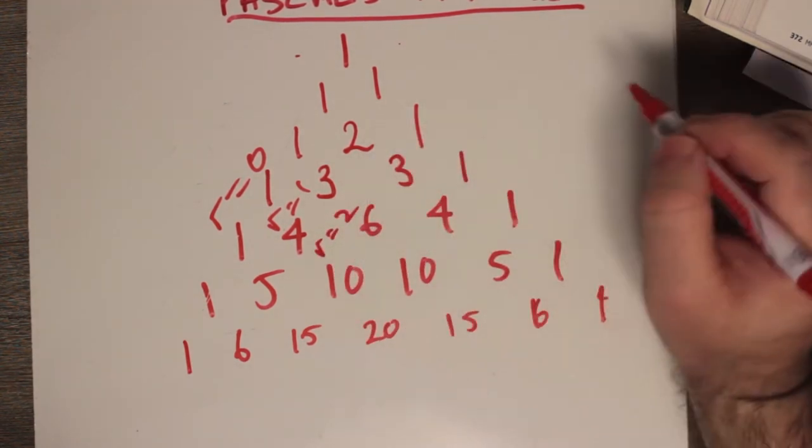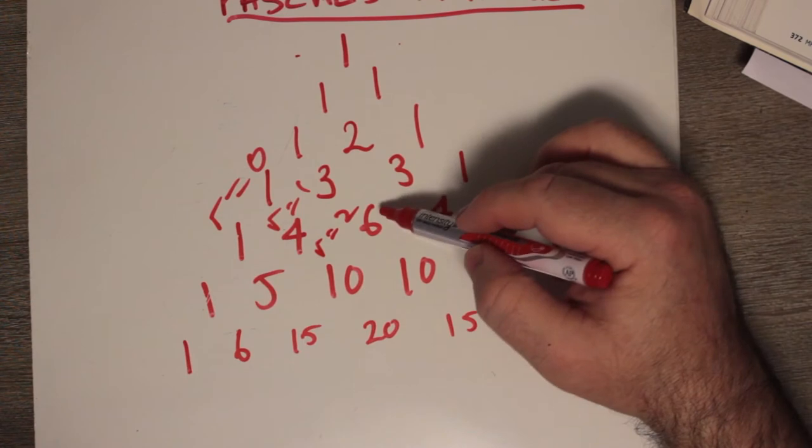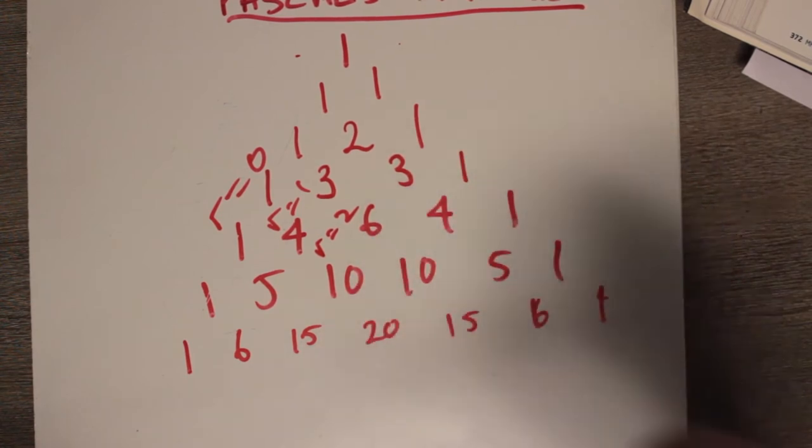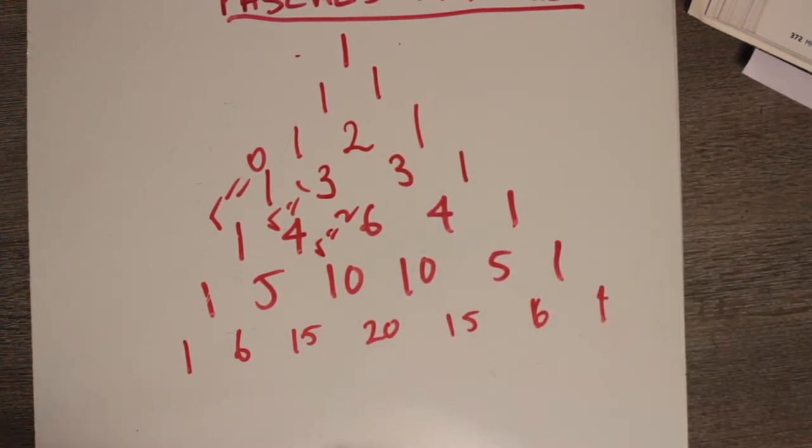But these numbers, the numbers in r equals two are a little peculiar, one, three, six, ten, fifteen, what can we make of those numbers?